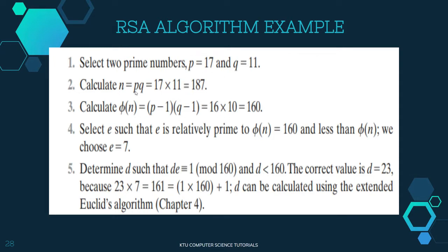The next step is to select a value e such that it is relatively prime to φ(n). We are using φ(n) equal to 160, and we choose e such that GCD(e, 160) equals 1. We select e equal to 7.